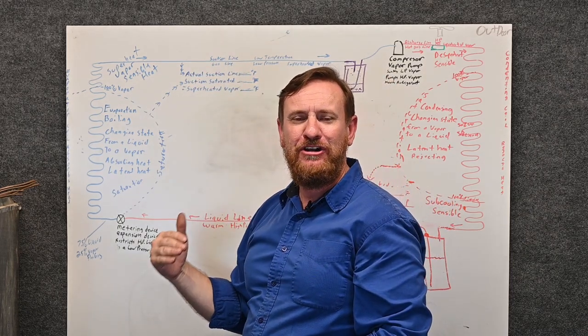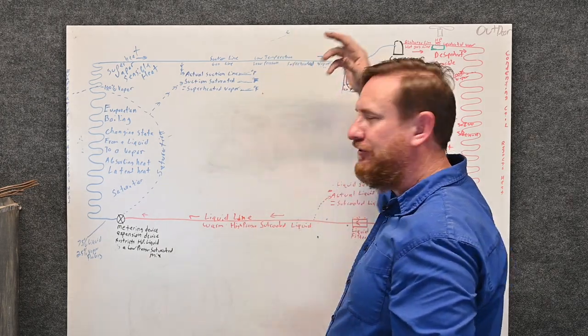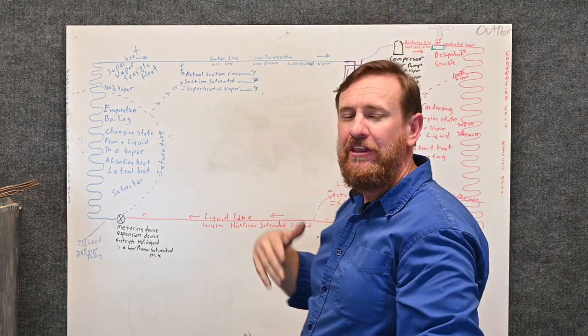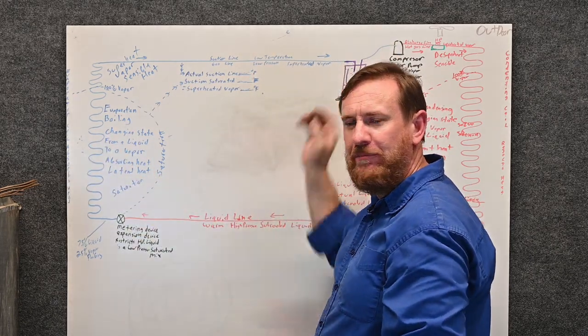When that suction pressure drops, we use one of the pressure switches we learned about earlier. And that pressure switch closes and shuts off the compressor. There's a lot more goes into it wiring wise, but simply the pressure is what shuts the compressor off.